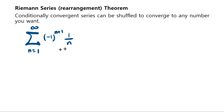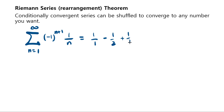If you don't like the sigma sign I can actually write them explicitly for you. Think about the following series: you have 1 over 1, minus 1 over 2, plus 1 over 3, minus 1 fourth, plus 1 fifth, and so on.